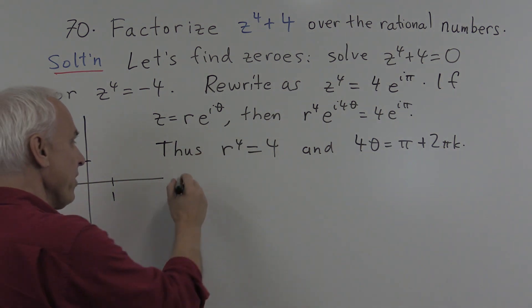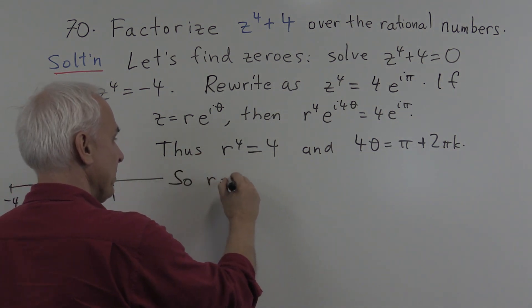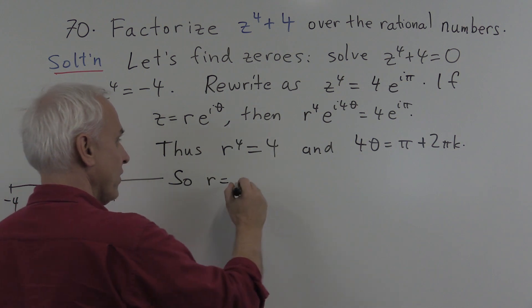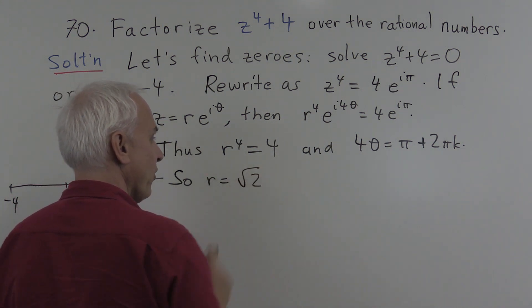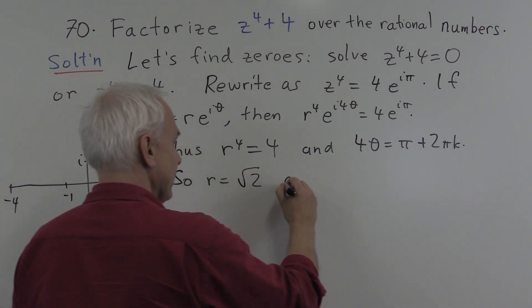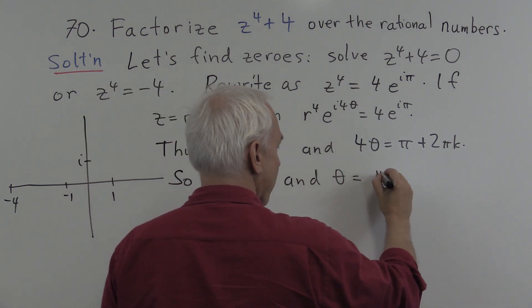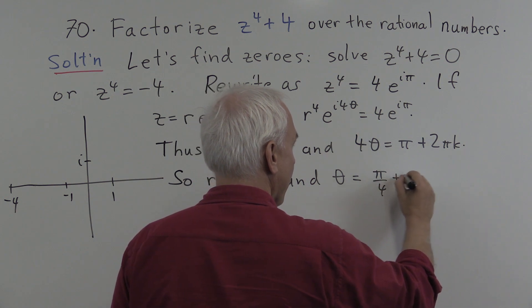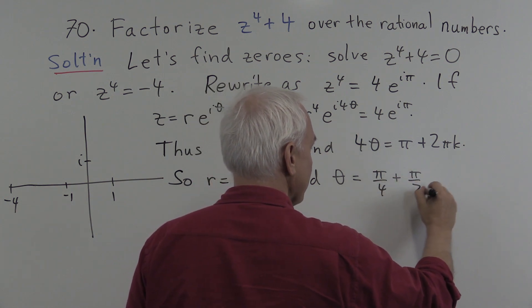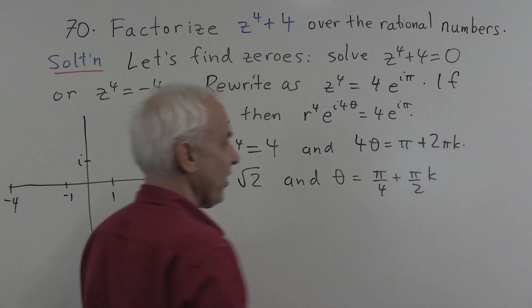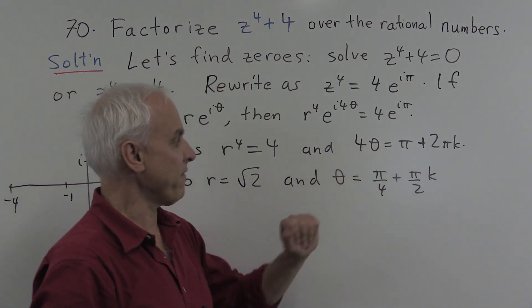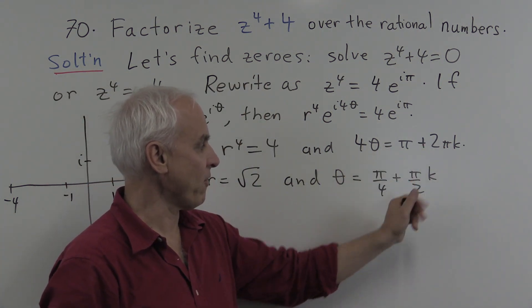r is a real number, so r has to be the fourth root of 4, which is the square root of 2. And theta is pi over 4 plus pi over 2 times k. If we divide both sides by 4, we get pi over 4, and the 2 pi divided by 4 is pi over 2.